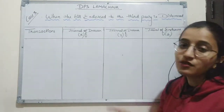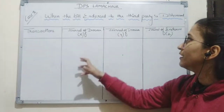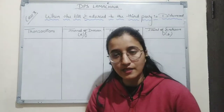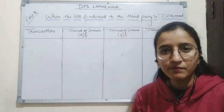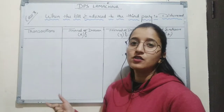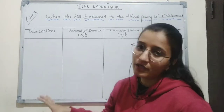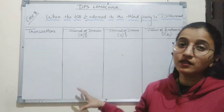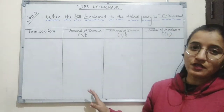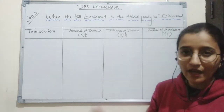If Y refuses to pay the amount of the bill to the third party, this is the case when the bill endorsed to the third party is dishonored. In this case, noting charges will be paid by the endorsee, and the endorsee will collect this amount of noting charges from the endorser, and ultimately this amount of noting charges will be paid by the acceptor of the bill. There are some journal entries to be passed in such a case in the books of X, Y, and Z.